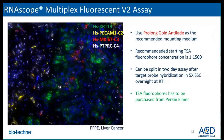The multiplex fluorescence V2 assay is a TSA-based assay. The TSA fluorophores have to be purchased from Perkin Elmer. Again, we recommend using ProLong anti-fade as the mounting media. This assay can be split into two days — after probe hybridization, you can leave the slides in 5x SSC overnight at room temperature.